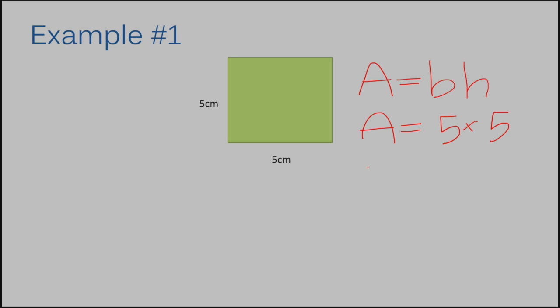Now, for my next step, I'm going to multiply the numbers that I've plugged in. So, I'm going to have area equals five times five, which is 25.